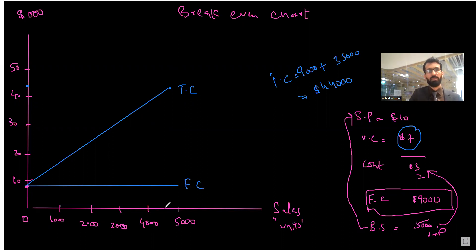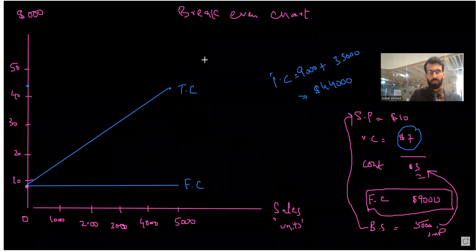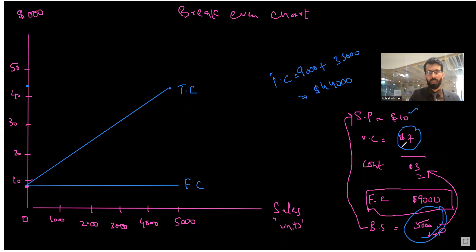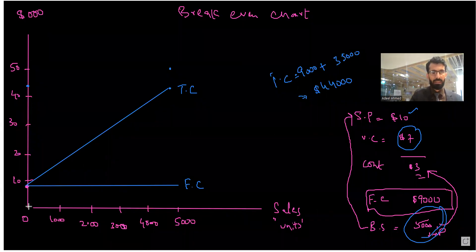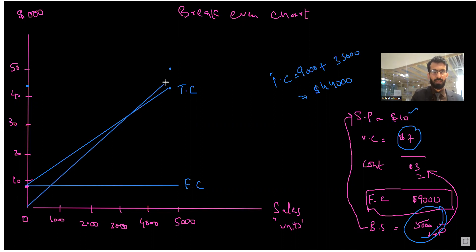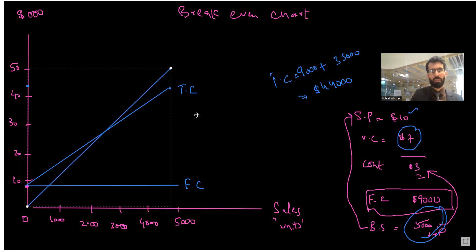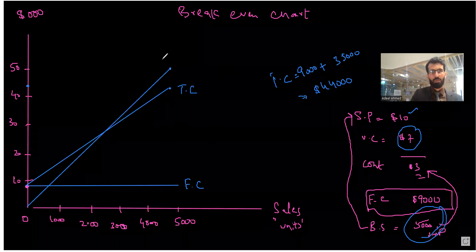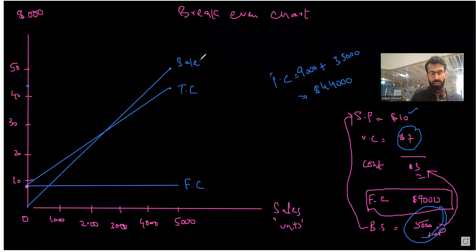Now we need to draw our sales revenue. If we sell 5,000 units at a selling price of $10, sales revenue is $50,000. The sales revenue line starts from the origin — zero units at zero revenue — and extends up to $50,000 at 5,000 units. This line on the chart represents our sales revenue.